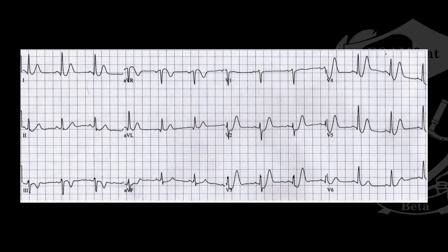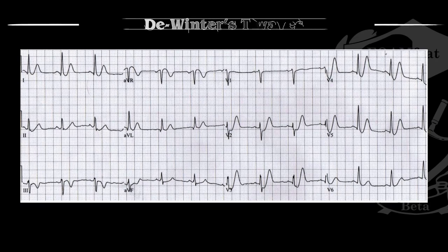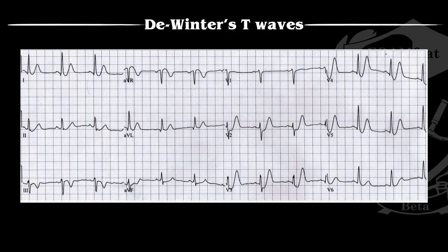Hey everyone and welcome back to ECG vlog number five. The question that was posed gave some pretty limited patient information with this 12-lead, and we wanted to know what was the name of the T wave pattern present in the precordial leads in V3 through V6. The answer is this is known as a DeWinter's T wave. In this episode we're going to talk about what this is, what this means, where it came about, some final take-home points, and some clinical examples.